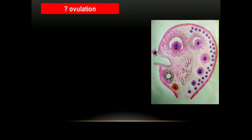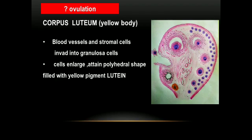Ovulation is defined as the rupture of the matured Graafian follicle and release of the ovum into the peritoneal cavity. After ovulation, the Graafian follicle converts into the corpus luteum, or yellow body. Blood vessels and stromal cells invade the granulosa cells; these cells enlarge and become polyhedral in shape, filled with a yellow pigment called lutein — hence the name corpus luteum.